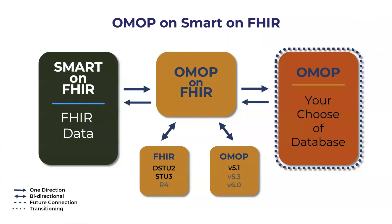We have also successfully integrated SMART on FHIR with OMOP on FHIR to make OMOP on SMART on FHIR. SMART on FHIR is an API used to write applications that run anywhere within a healthcare system. It has an open architecture with EHR plugins, provides ease of access and security to applications, and has become the backbone for many cloud services such as Microsoft Azure, Google Cloud, as well as Apple's personal health record. By combining SMART and OMOP, this creates an even more powerful environment for building out analytics-based tools.